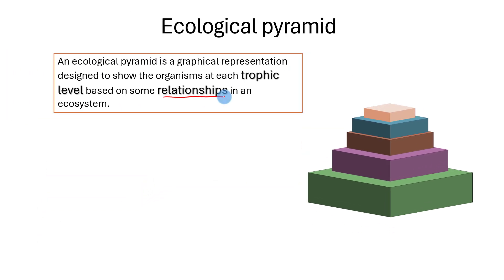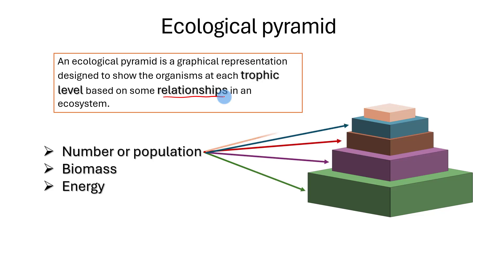In an ecosystem, a definite relationship exists among the number, biomass, and energy of producers, primary consumers, secondary consumers, and tertiary consumers. When this relationship is expressed in a graph, a pyramid is obtained, which is called an ecological pyramid.